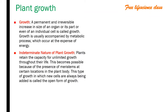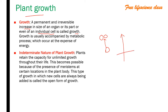What does differentiation actually mean? We can simply say that differentiation leads to growth. Growth means it is a permanent or irreversible increase in the size of an organ, part, or individual cell. If you take a cell, it will divide into two, and again it will divide further and further, increasing the length or width of the plant.